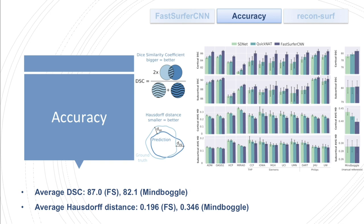One additional advantage of using FastSurfer CNN compared to a standard FreeSurfer run is that because the segmentation is generated just based on the MRI volume input, many steps used in the traditional FreeSurfer Recon-all have become obsolete, such as skull stripping and non-linear atlas registration, which already results in a speed-up of the entire pipeline.